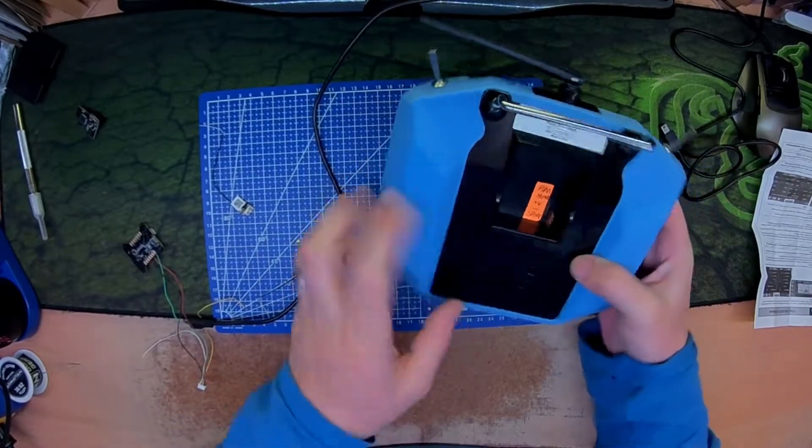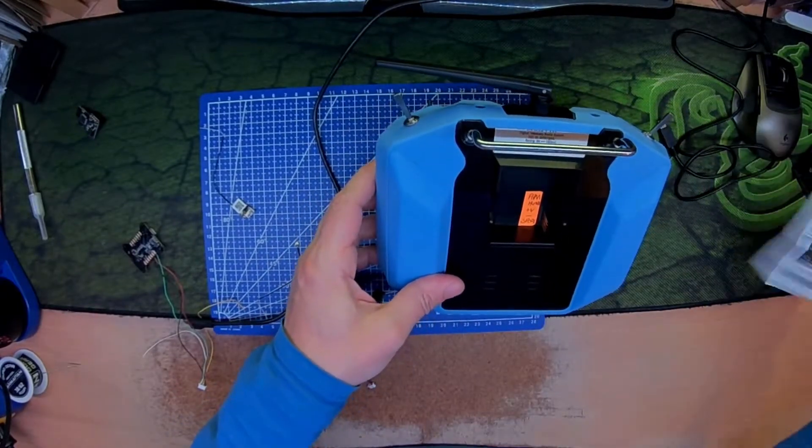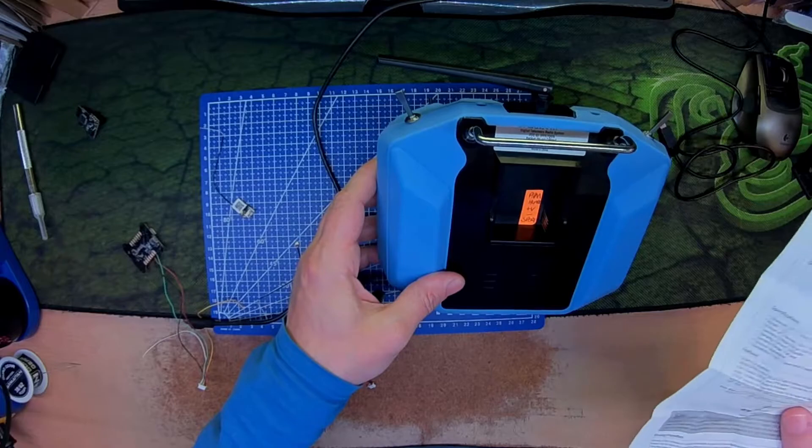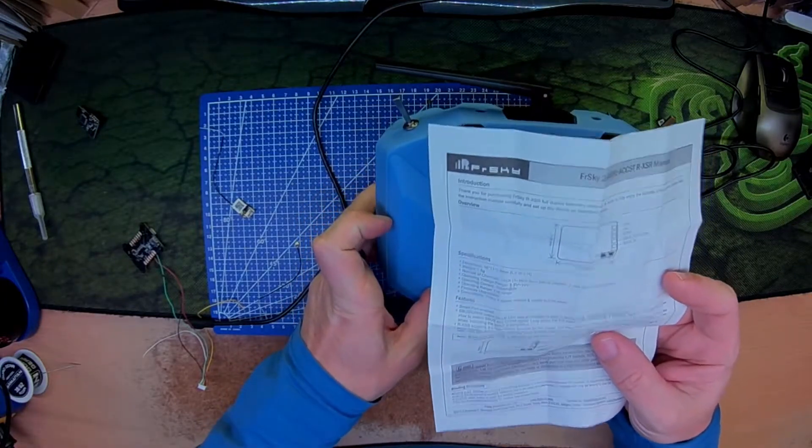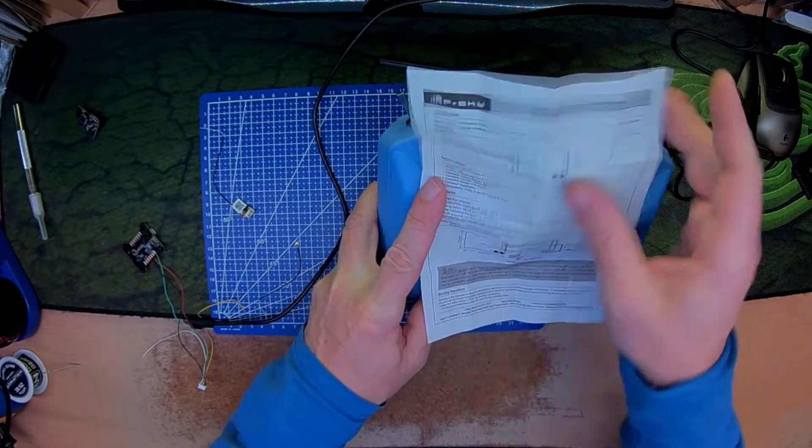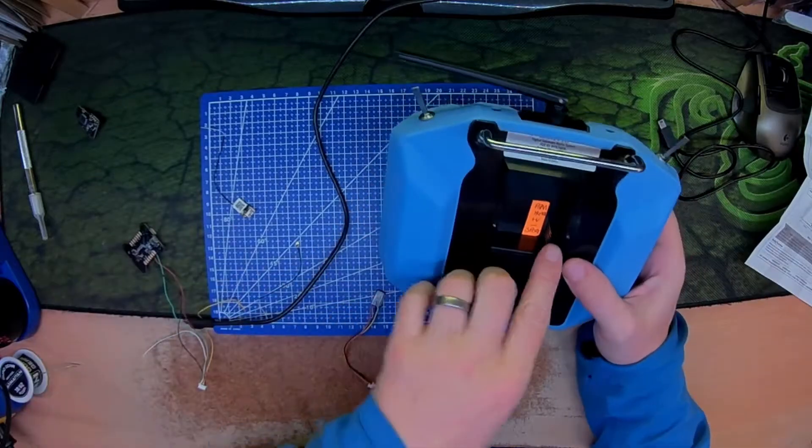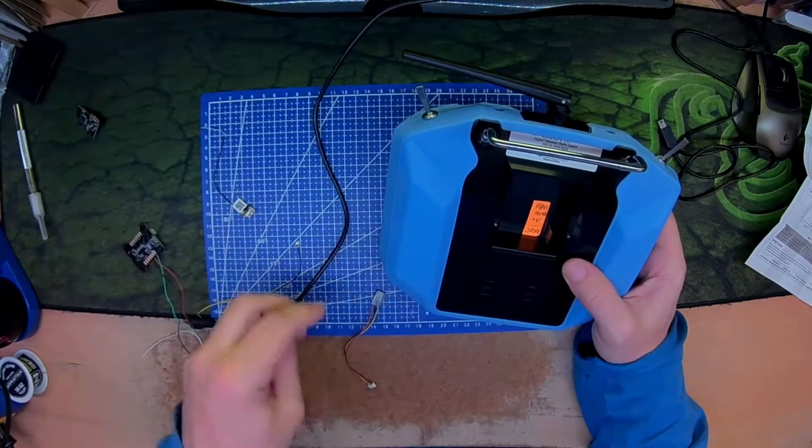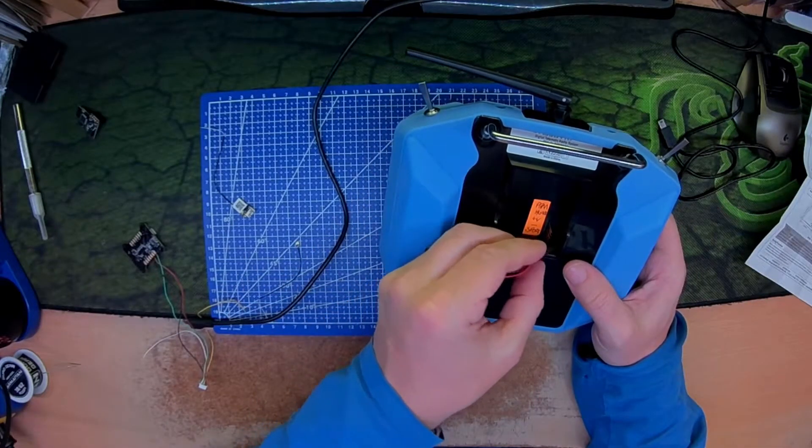Right, my transmitter is running on the standard NiMH battery or nickel metal hydride. Just want to verify the voltage input: three and a half to ten volts input range, because you are getting VCC from this port here.